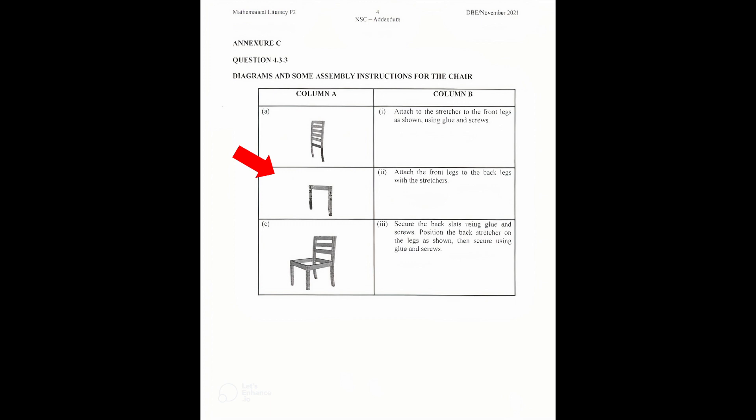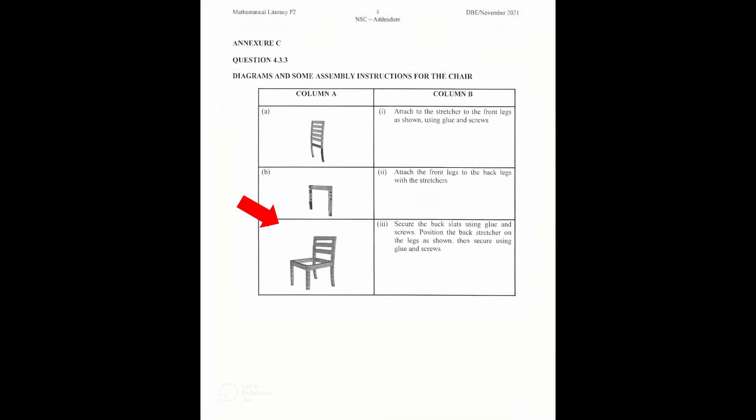B corresponds with 1 in column B: attach the stretcher to the front legs as shown using glue and screws. And C corresponds with 2 in column B: attach the front legs to the back legs with the stretchers.